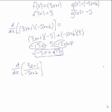The rule for the quotient is I take the bottom times the derivative of the top minus, not plus this time, minus the top times the derivative of the bottom divided by the bottom squared.